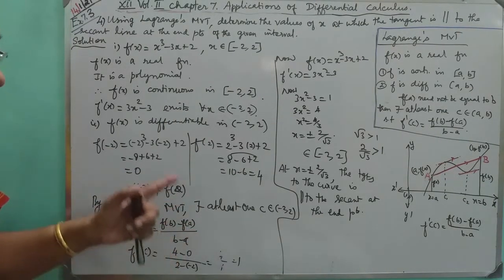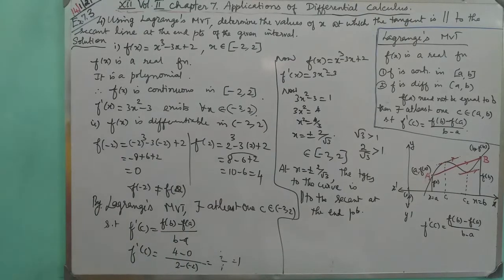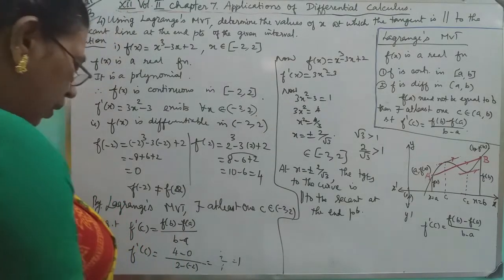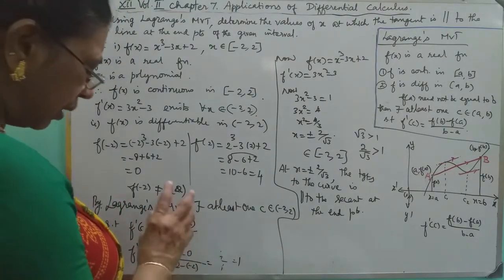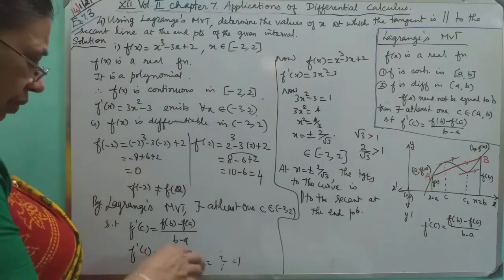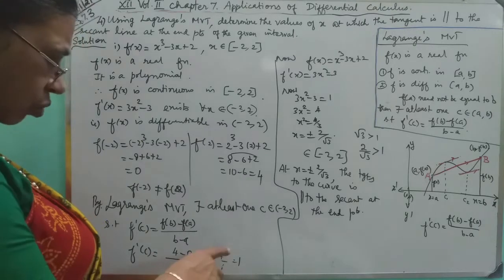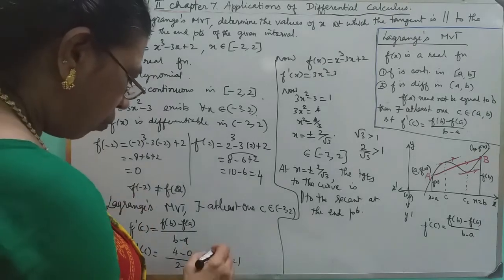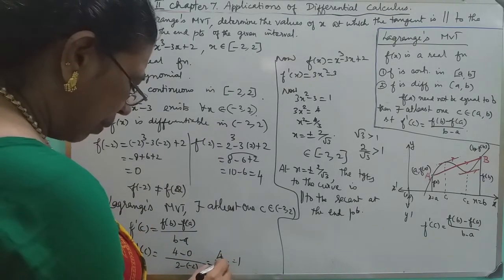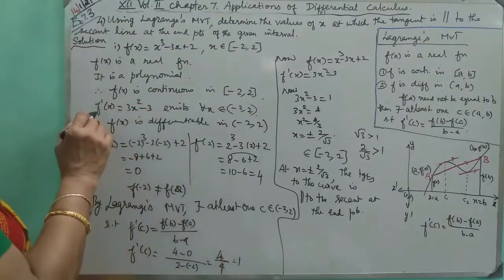Lagrange's mean value theorem says there is at least c belongs to open interval where f prime of c is equal to the formula. Here we have one thing, values you can substitute: 4 minus 0, 8, 2 minus minus 2 value is 1. At mean, now we have the derivative, we have one derivative.